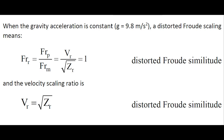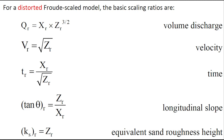When the gravity acceleration is constant, a distorted Froude scaling implies that the ratio of the velocity scaling ratio divided by the square root of the vertical scaling ratio equals 1. A distorted Froude scaling model is used with the following basic scaling ratios. Note in particular that the longitudinal slope, theta, differs between the model and the prototype.